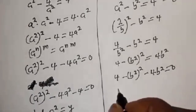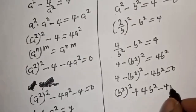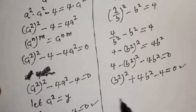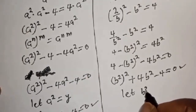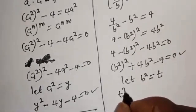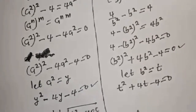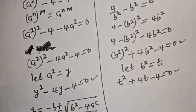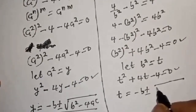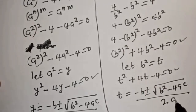Rearranging, we get b to the fourth plus 4b squared minus 4 equals 0. This is a quadratic equation which can also be solved using the quadratic formula. Let b squared equal t, then t squared plus 4t minus 4 equals 0, a quadratic equation solved using the quadratic formula.